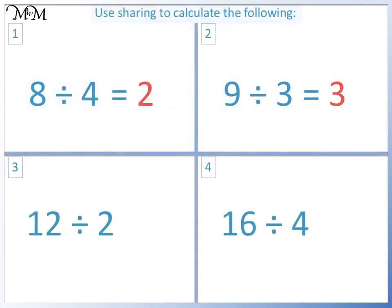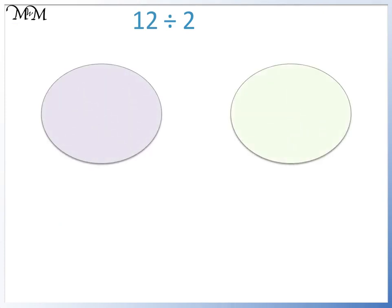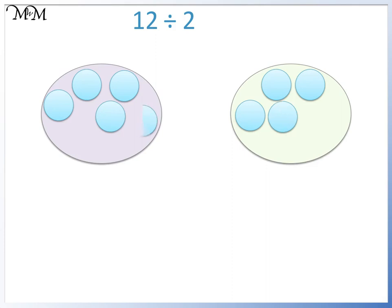Question three: twelve divided by two. We are dividing by two, so we draw two circles. We want to divide twelve, so we take it in turns to draw a counter in each circle until we reach twelve: one, two, three, four, five, six, seven, eight, nine, ten, eleven, twelve. There are six counters in each circle, so twelve divided by two equals six.